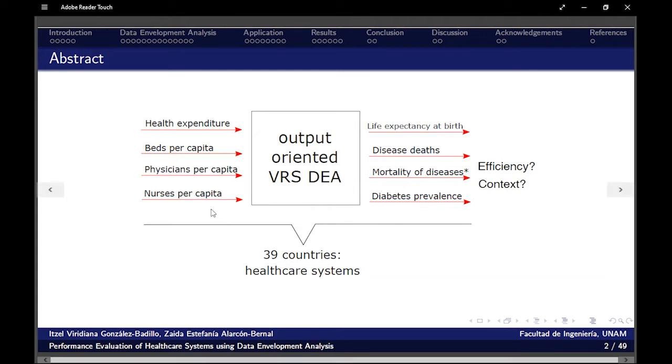Having four inputs to our analysis tool that is going to be output-oriented variable returns to scale data envelopment analysis, we're going to get four outputs, four variables, from which we're going to take a discussion of how is the efficiency, how is the context of 39 countries, particularly of their healthcare systems.